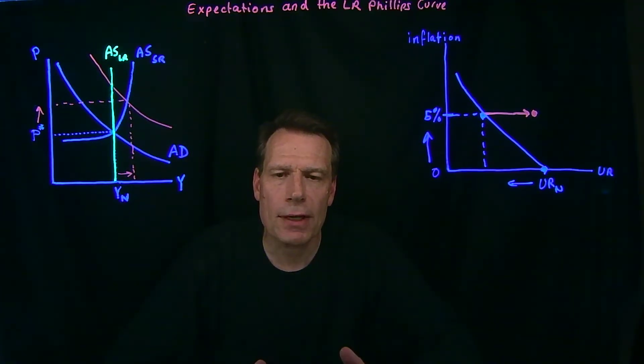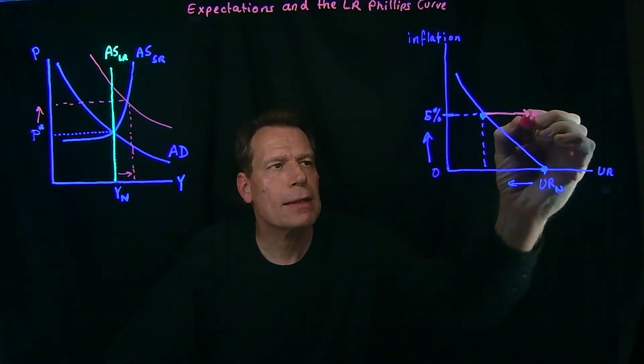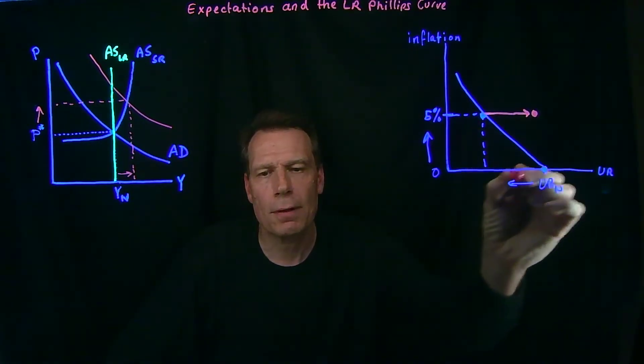That higher level of inflation gets built into the system. It gets built into expectations about future wages, into wage contracts and so forth. So, now we're at this point, off the original Phillips curve.